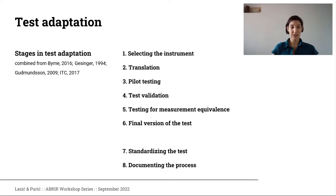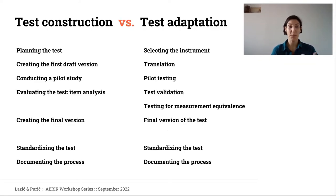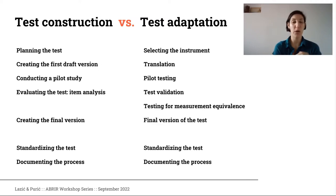The stages in test adaptation are: first, selecting the instrument we want to adapt; then translation; next, pilot testing; then test validation; then testing for measurement equivalence; then creating the final version of the test; standardizing it; and documenting the process. These stages correspond pretty much one-to-one with the stages of test construction — where in construction we plan a new test, in adaptation we find a test that would be useful but isn't available for the target population.